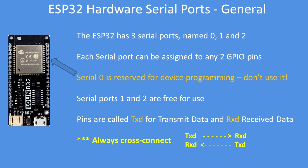To begin with, some general points about the serial ports: the ESP32 has three, named zero, one, and two. Each one of those ports can be assigned to any two GPIO pins — one for transmit, one for receive. Serial zero is reserved for device programming; it's best not to use it. It's much simpler to just use the two free ports, serial one and two. The pins are conventionally called transmit data and receive data — TXD and RXD — and the key for success is to always cross-connect your devices: transmit data to receive data, receive data to transmit data.